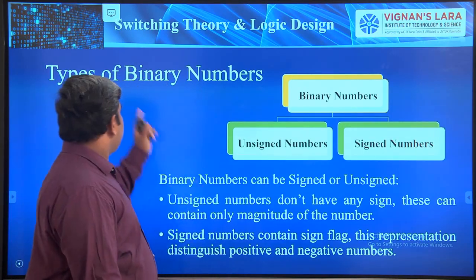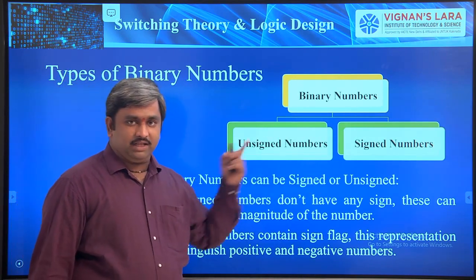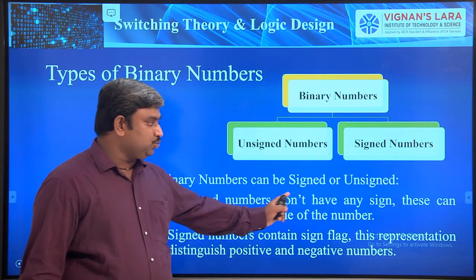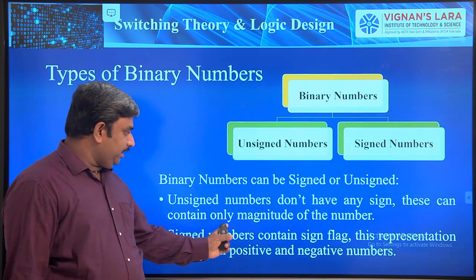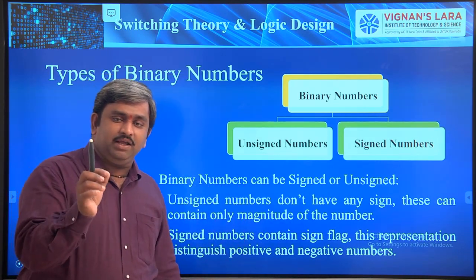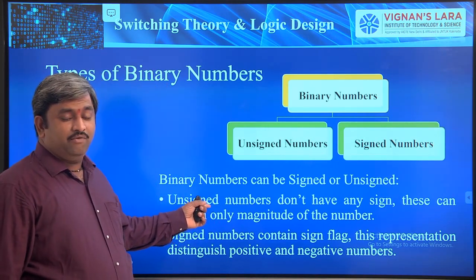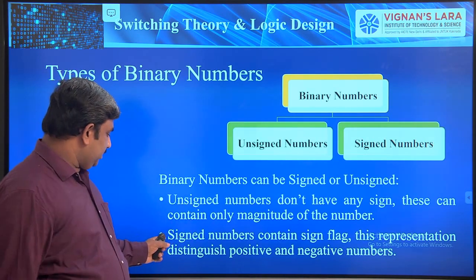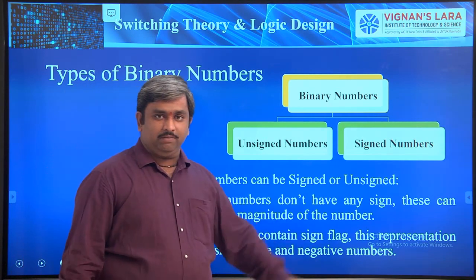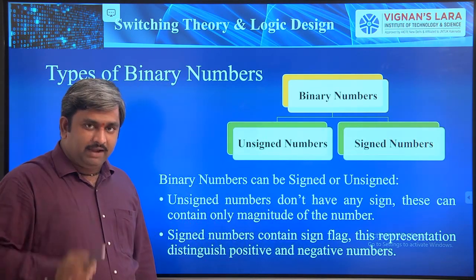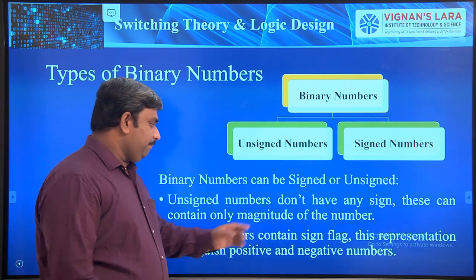Binary numbers have two types: unsigned and signed. Unsigned numbers do not have a visible sign; each bit represents a weight — 2 power 0, 2 power 1, 2 power 2, 2 power 3, and so on, based on bit position. Signed numbers contain a sign flag. This sign flag distinguishes positive or negative numbers. In a signed number, one bit represents the sign and the remaining bits represent the weight of the value.